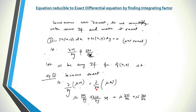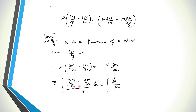Since mu is a function of x and y, and M is also a function of x and y, you can find the partial derivative of mu·M with respect to y by the product rule: first function as-is times derivative of second, plus derivative of first times second as-is. So we will have this expanded equation.